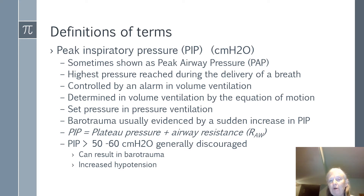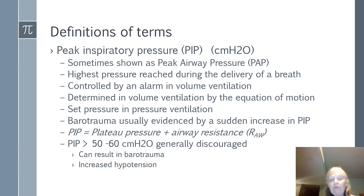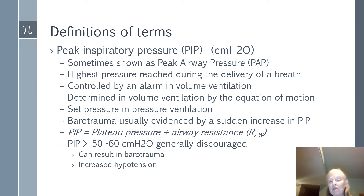Your peak inspiratory pressure is set in pressure ventilation and doesn't change. In volume ventilation, your peak inspiratory pressure can change with either compliance or resistance. We set an alarm to prevent the volume from going too high and damaging the patient's lungs. Barotrauma we usually see by a sudden increase in our PIP. The formula for PIP is plateau pressure plus airway resistance. We like to keep our PIP less than 50 to 60, because it can result in barotrauma and increases hypotension — you're adding additional pressure in the intrathoracic cavity.